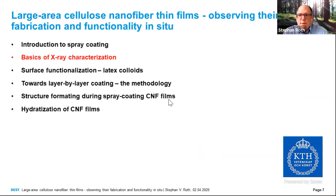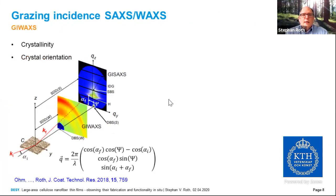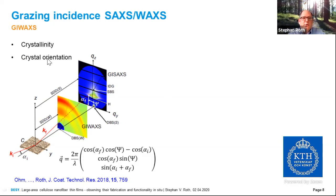After this motivation for spray coating, let me introduce the basics of X-ray characterization. We investigate thin films using small-angle and wide-angle X-ray scattering — abbreviated SAXS and WAXS — but in grazing incidence mode. In grazing incidence mode, the beam impinges under a low angle, typically below one degree, onto the surface and is scattered. Depending on where you put your detector — close to the sample or farther away — you are in the GIWAXS or GISAXS regime. Typical detector distances at the photon energies we use are 5–15 centimeters for GIWAXS and 1 to up to 10 meters for GISAXS.